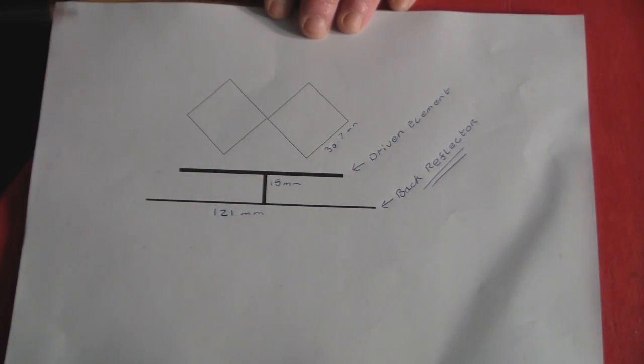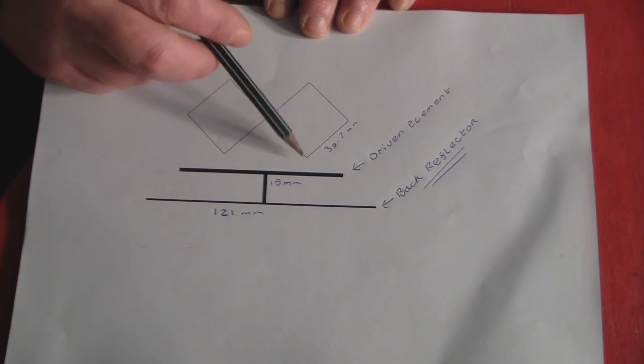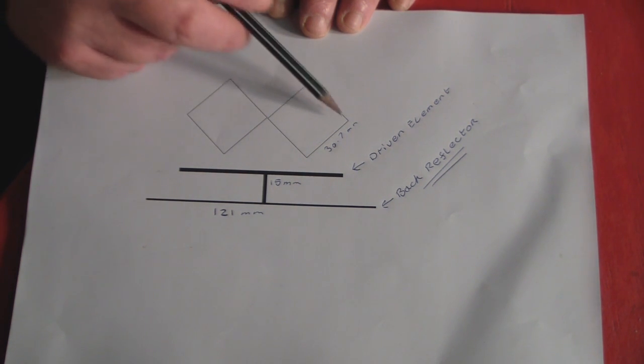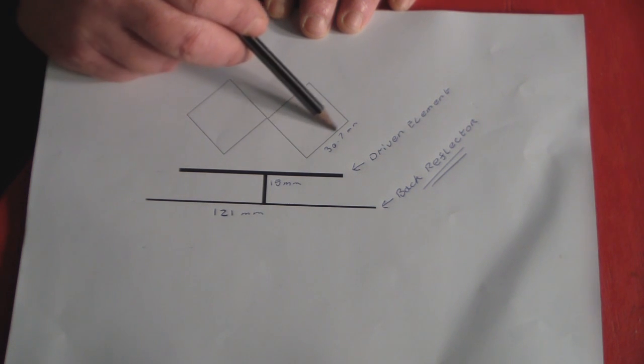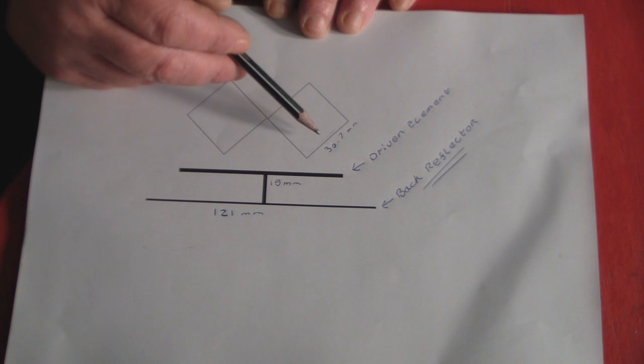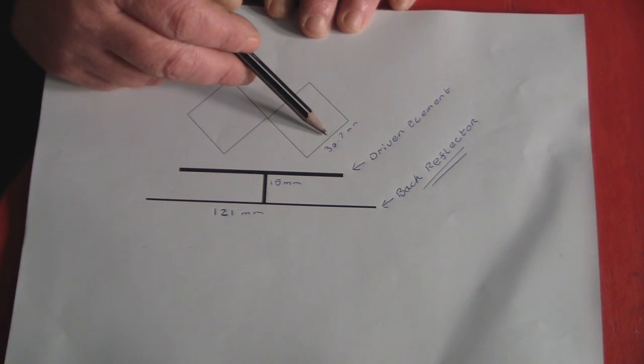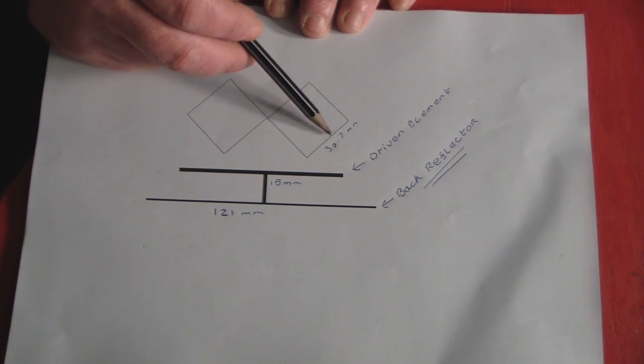So now we're going to actually build the driven element of the bi-quad antenna itself. And if we have a look at this diagram here, we've got the driven element here. It goes around like a bowtie shape. Each side of the driven element is 30.7mm. As I said in the beginning, that's roughly tuned to channel 6 on the spectrum or on your router. And 30.7mm is really hard to get that exact by hand.